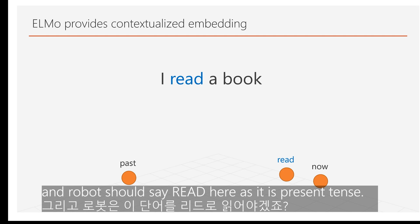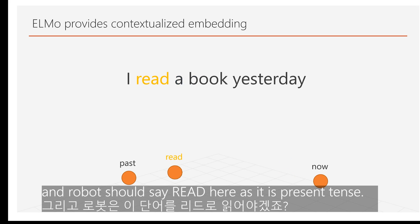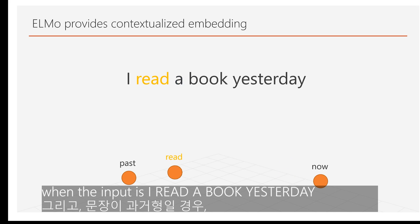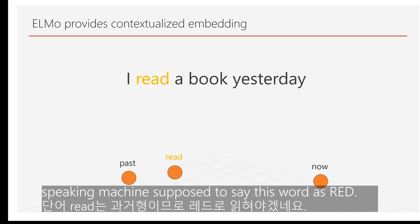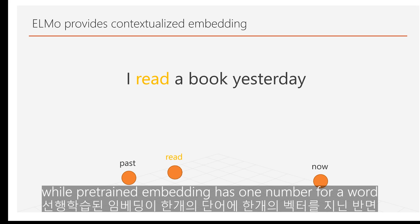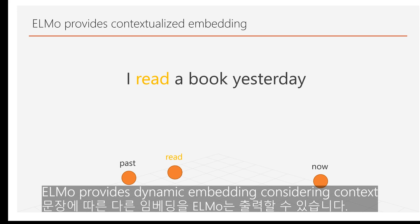For example, in the sentence 'I read a book', since it is present tense, the embedding should be in a similar location to 'now' and READ should be pronounced as 'reed'. Similarly, when the text is 'I read a book yesterday', the embedding for READ should be similar to the past, and the speaking machine should pronounce this token as 'red'. While pre-trained word embeddings have one vector per word, ELMo provides embeddings dynamically considering the given context.